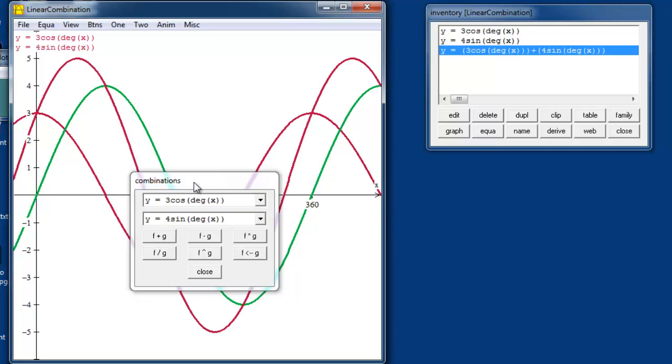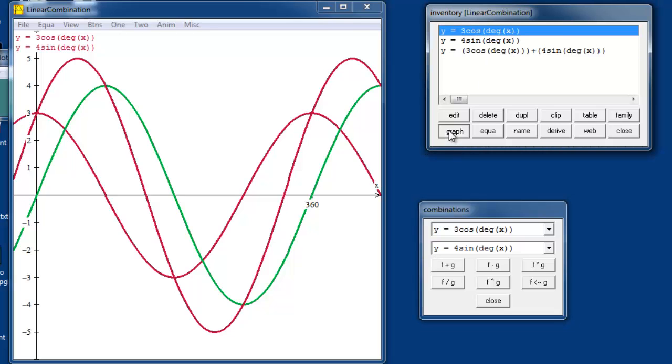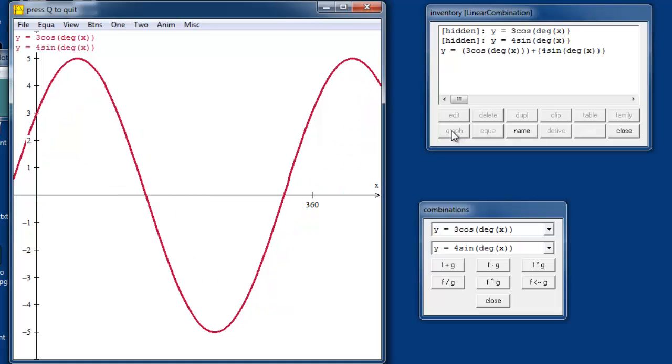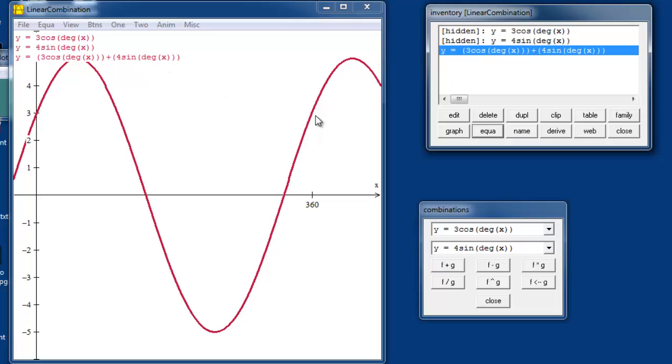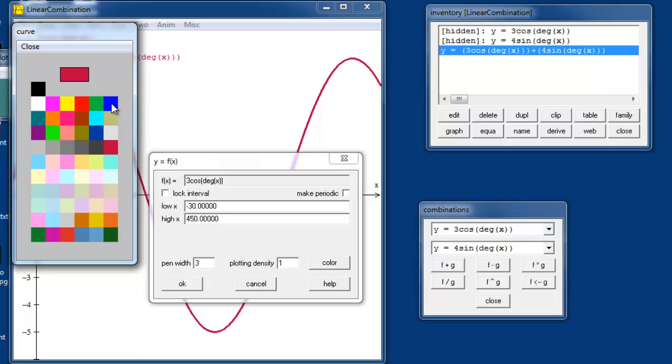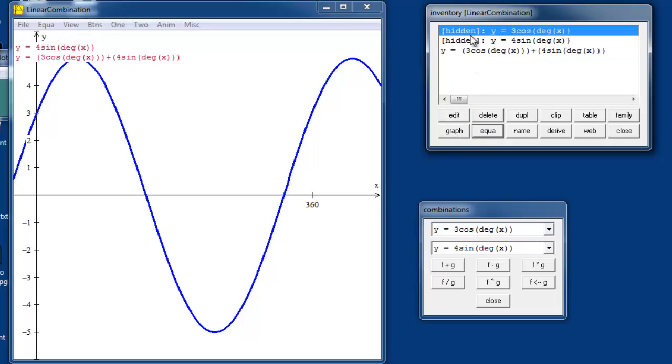And when we add them, we get this picture. I'm going to hide the original two functions so that we can look solely at the combination function. Let's change the color here. Let's make it blue. Now, if we look at this function, it appears to be a sinusoid as well.